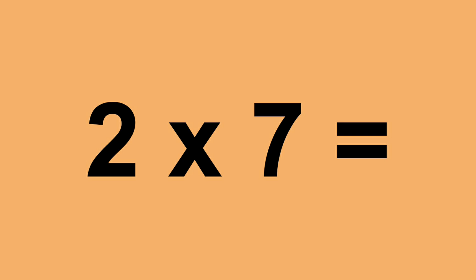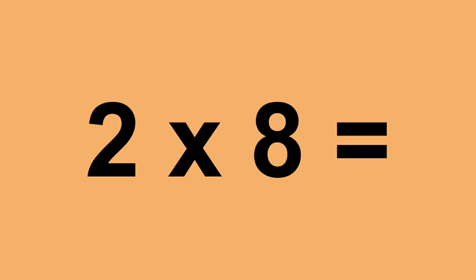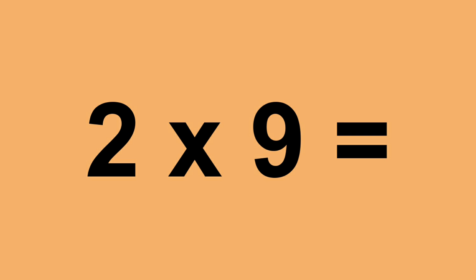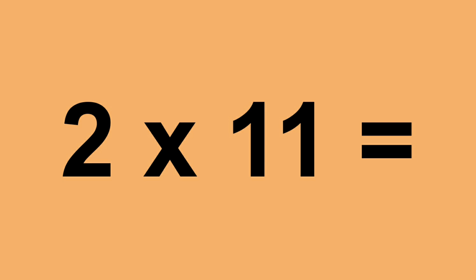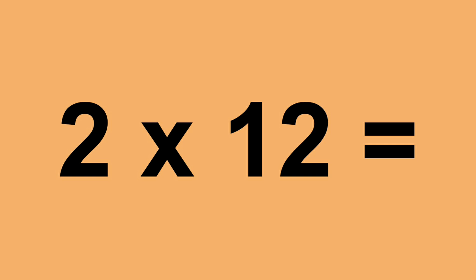Two times seven equals fourteen. Two times eight equals sixteen. Two times nine equals eighteen. Two times ten equals twenty. Two times eleven equals twenty-two. Two times twelve equals twenty-four.